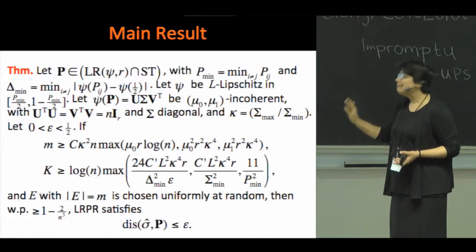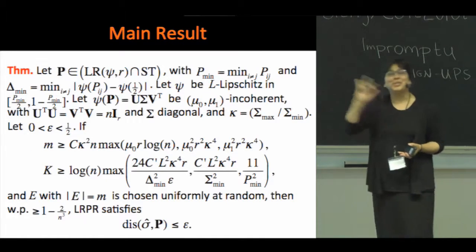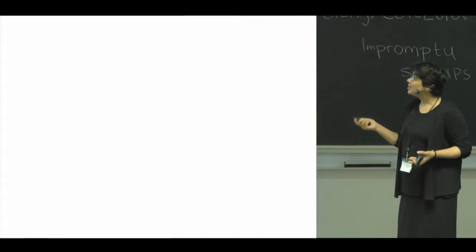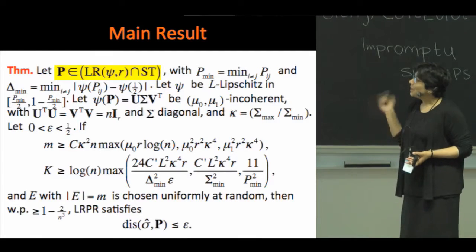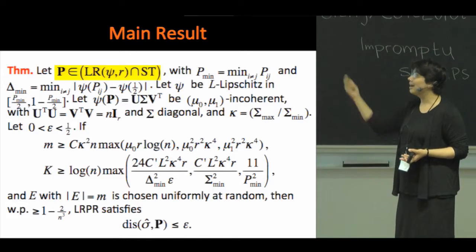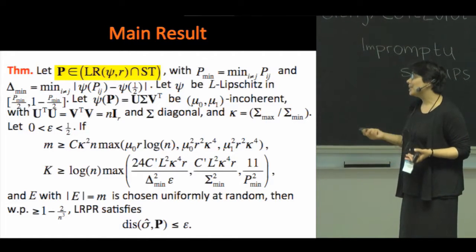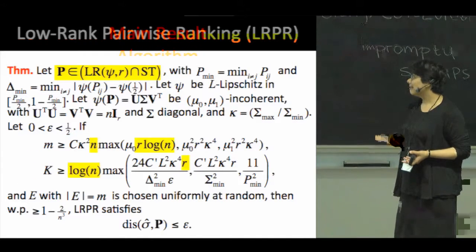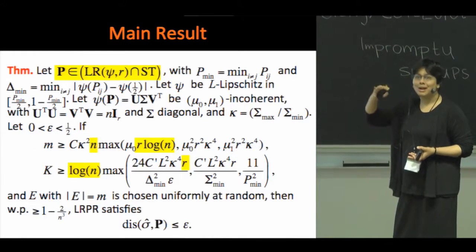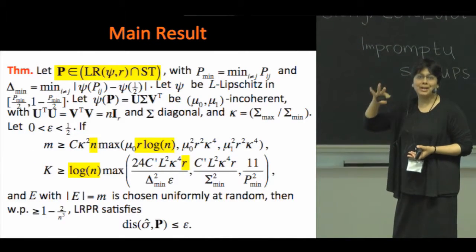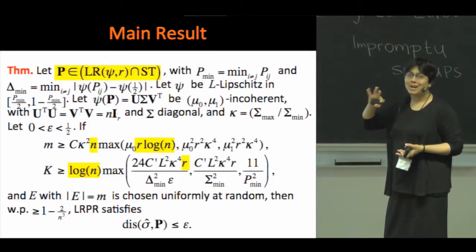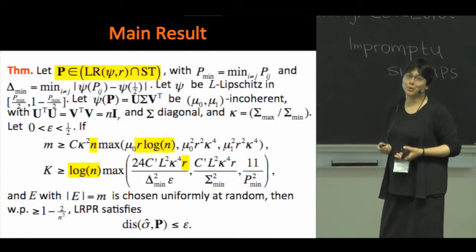The main result is this: if your pairwise preference matrix has rank r under a suitable link, then it is sufficient to compare roughly N r log N pairs, each roughly r log N times, in order to construct a good ranking.